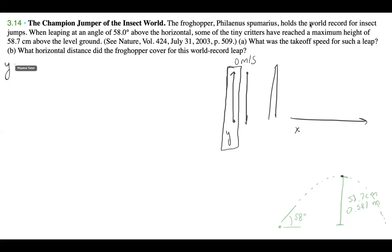So for y, we have our vi, which is actually what we're trying to figure out. So for our vi, we have vi sin 58. Because we know that right over here, we can break this down into vi y, and then we can do vi x. So we have vi sin 58. And then for our acceleration, we can do negative 9.8 meters per second squared.